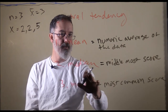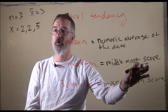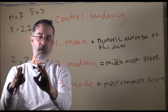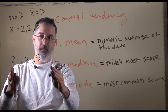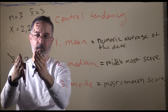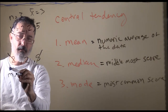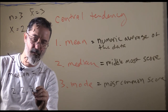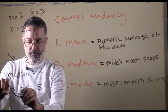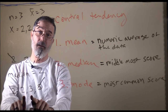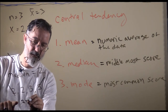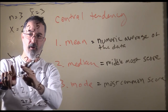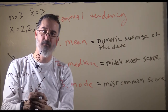The median is the middlemost score and is really easy to calculate. For the data set 2, 2, and 5, sort them low to high and remove from the edges until one is left — the median is 2. If we had a different data set of 2, 2, 3, and 5, we'd end up with two middle scores; just take their average: 2 plus 3 divided by 2 gives a median of 2.5. Sort them low to high, exclude from the edges, and the score left over is your median.